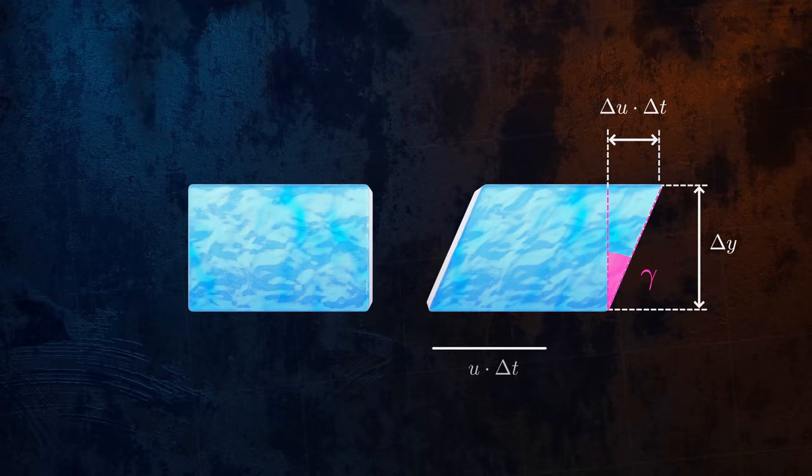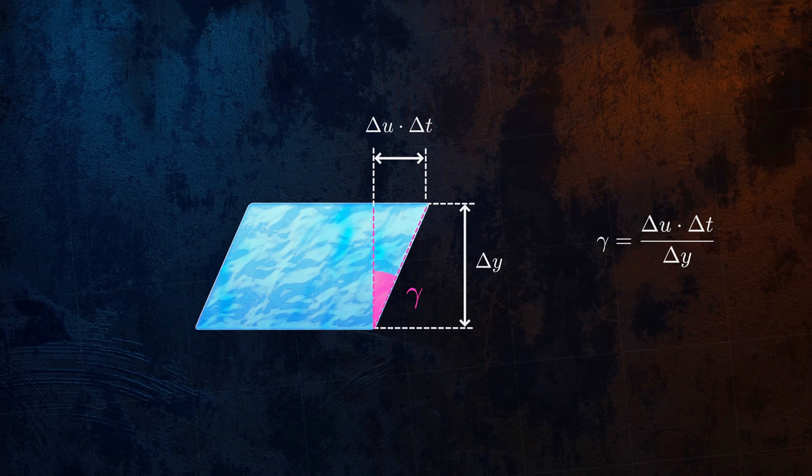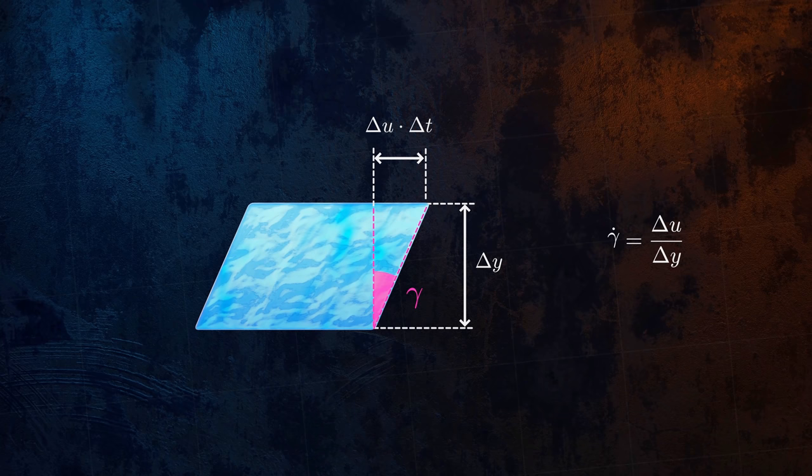This generates a shear strain that we can calculate using trigonometry and the small angle approximation. By rearranging, we can see that the slope of the velocity profile is equivalent to the rate at which the shear strain is applied.